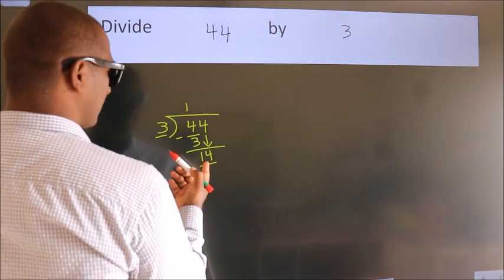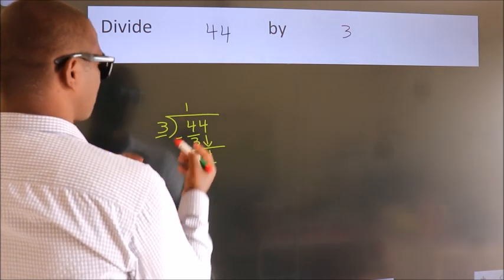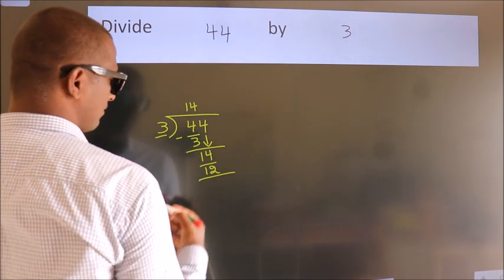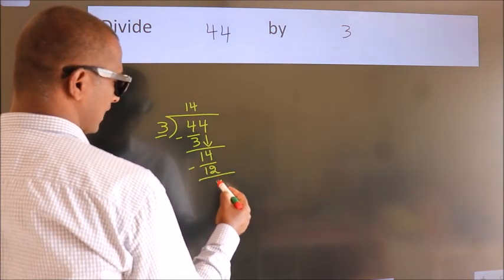A number close to 14 in the 3 table is 3 fours, 12. Now, we subtract. We get 2.